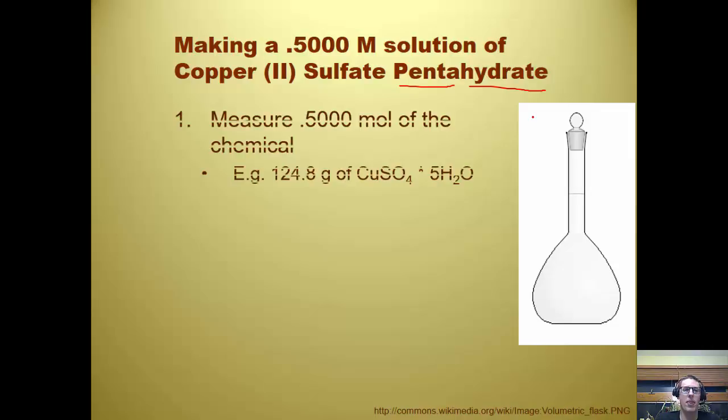So you measure out 0.5 moles of the chemical, which is 124.8 grams of copper sulfate pentahydrate. That just comes from the molar mass of the solution. You add that into your volumetric flask.